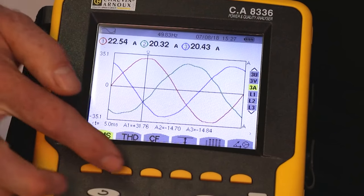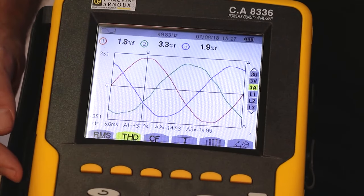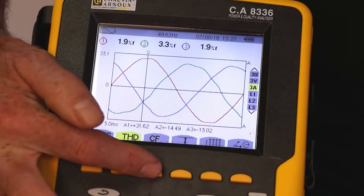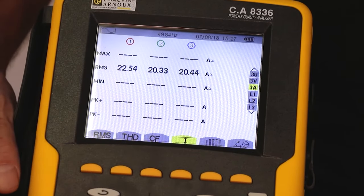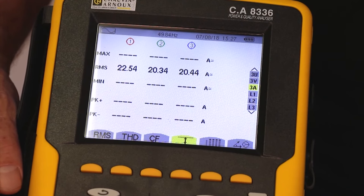On the fast keys, we're able to look at total harmonic distortion. Also, we can select crest factor, or we can select min and max. So it shows us the minimum and maximum RMS positive and negative peaks of the currents and voltages we're looking at.